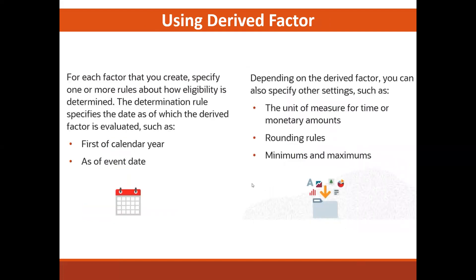For each factor that you create, you can specify one or more rules about how eligibility is determined. The determination rule specifies the date as of which the drive factor is evaluated — for example, as of the first of the calendar year, or based on the event date of the particular event being processed. Depending upon the drive factor, you can also specify units of measure for time or monetary amounts, and you can include a rounding rule.